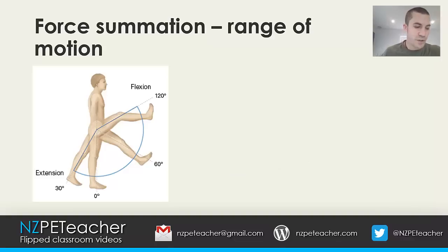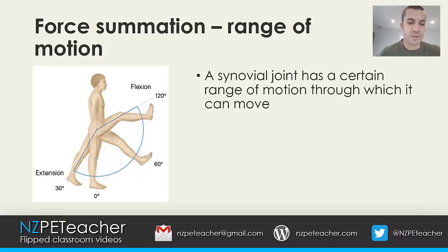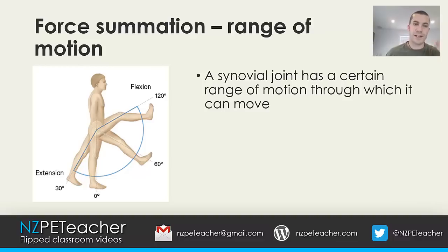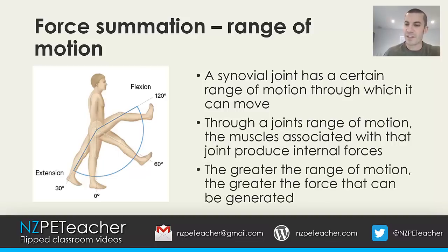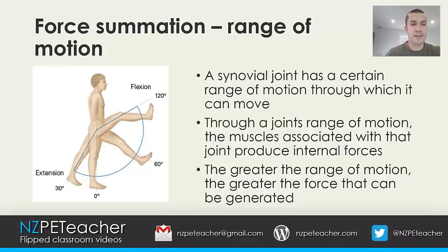Okay, range of motion — the first factor affecting force summation. A synovial joint has a certain range of motion through which it can move. You can see an example of the ball and socket joint of the hip in that image. Through a joint's range of motion, the muscles associated with that joint produce internal forces. The greater the range of motion, the greater the force that can be generated. So when looking at hip extension, if an athlete could only achieve hip extension to around 20 degrees, they're not going to generate as much force.